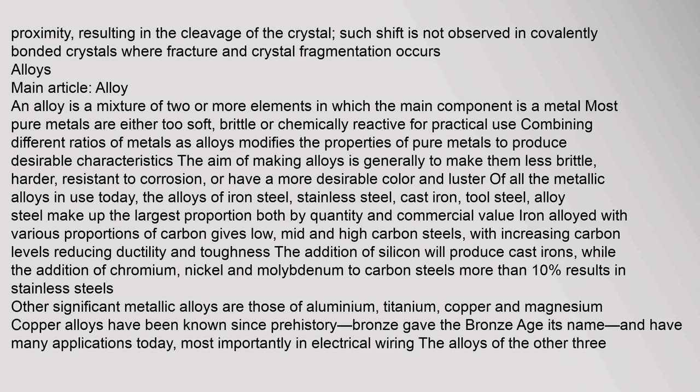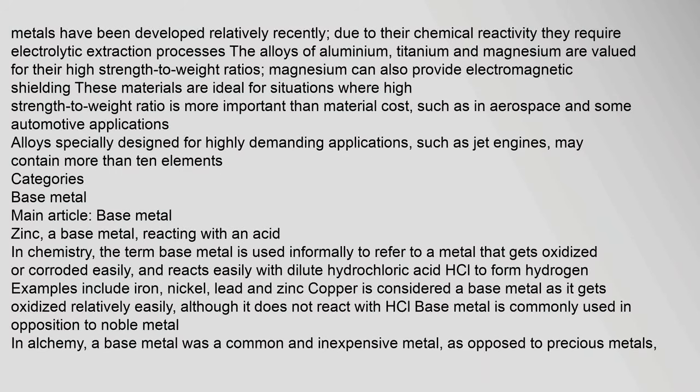Iron alloyed with various proportions of carbon gives low, mid, and high carbon steels — with increasing carbon levels reducing ductility and toughness. The addition of silicon produces cast irons, while the addition of chromium, nickel, and molybdenum to carbon steels (more than 10%) results in stainless steels. Other significant metallic alloys are those of aluminium, titanium, copper, and magnesium. Copper alloys have been known since prehistory — bronze gave the Bronze Age its name — and have many applications today, most importantly in electrical wiring.